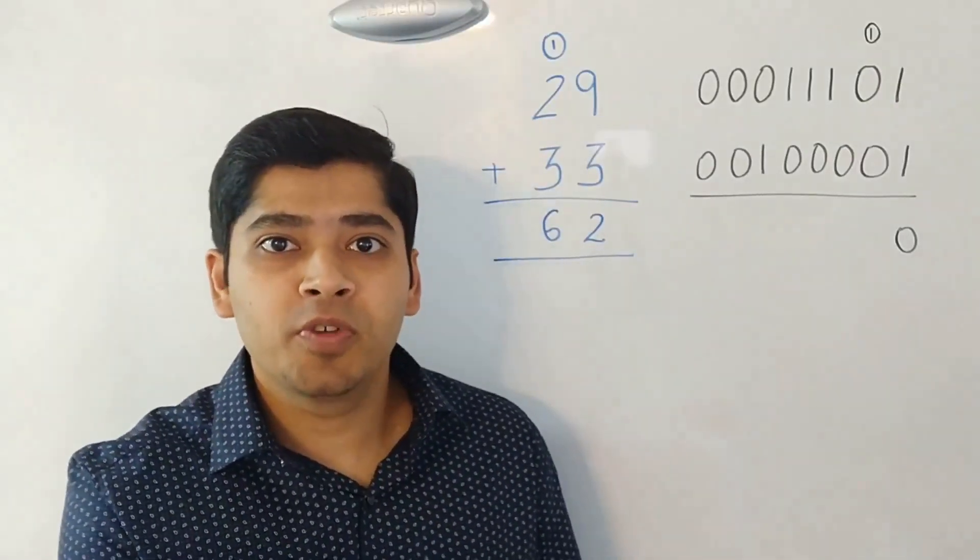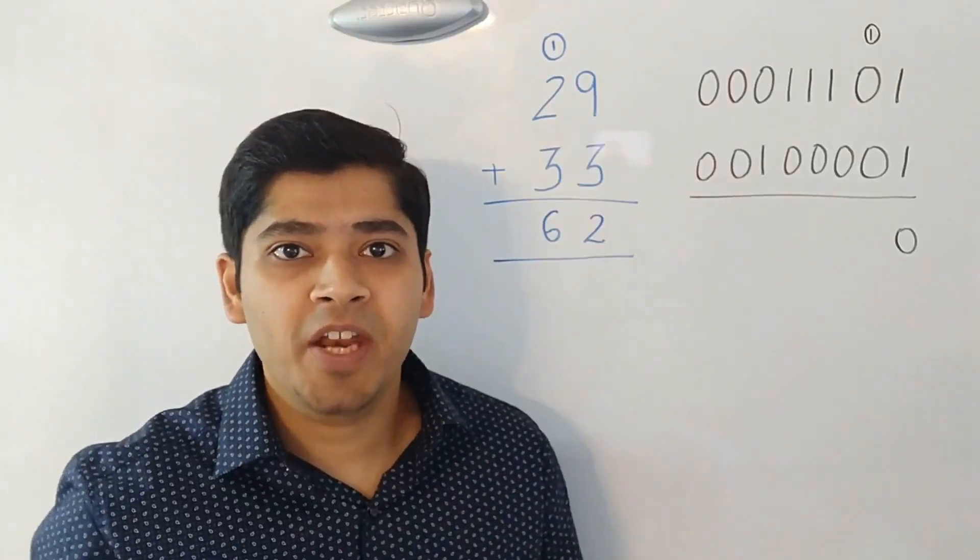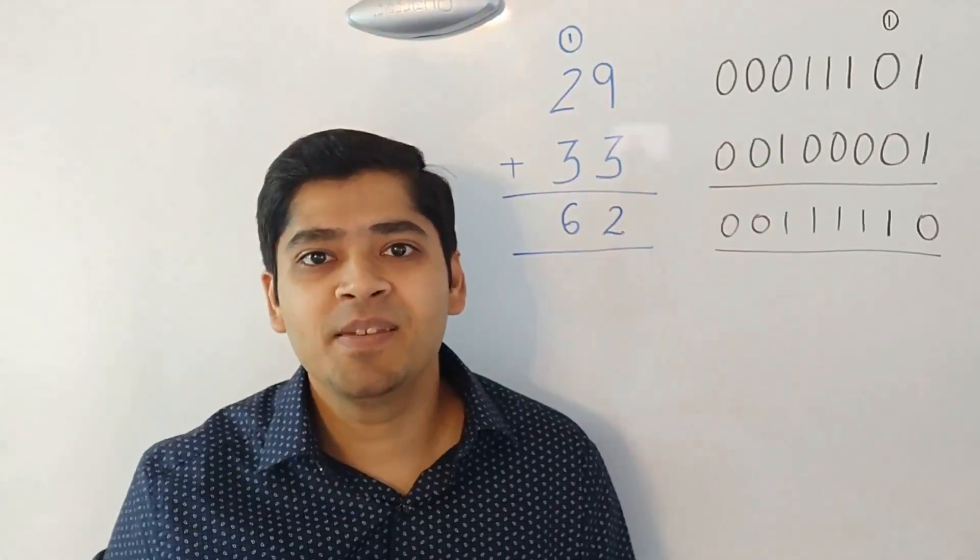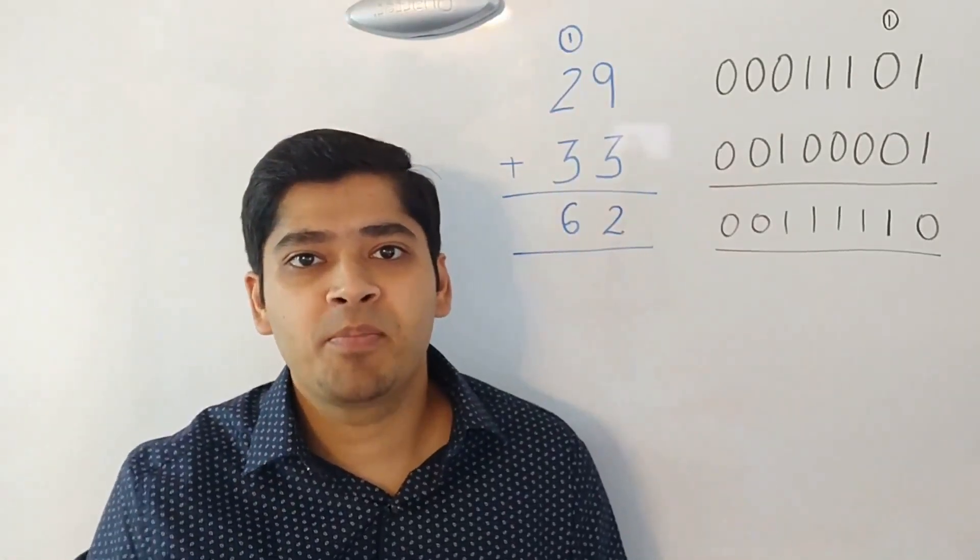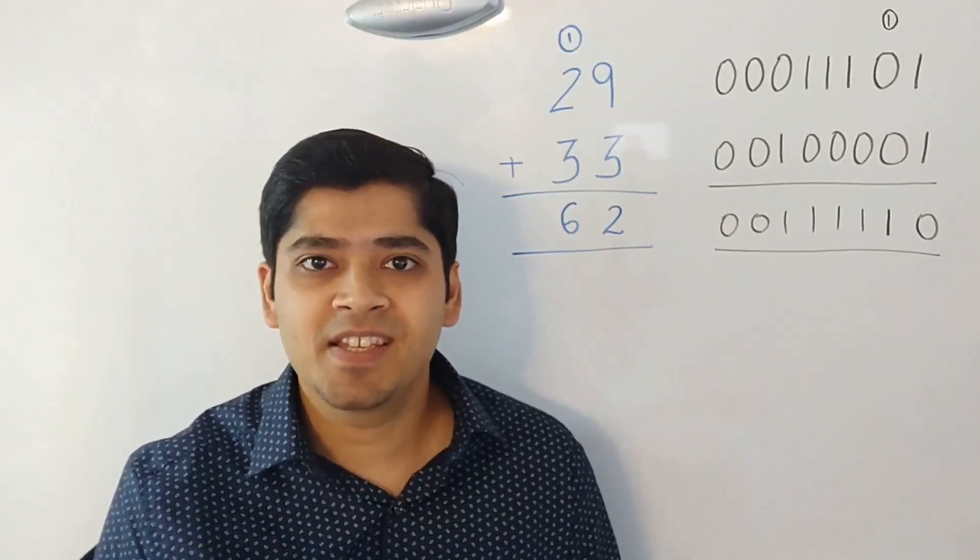Now, you move to the second bit. Now you have 0 and 0 and you have a carry over of 1 which again sum up to 1. Similarly, you can do the same procedure for the rest of the digits and you will see this result.